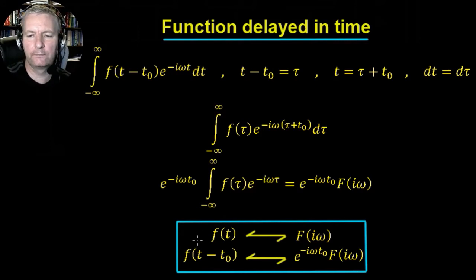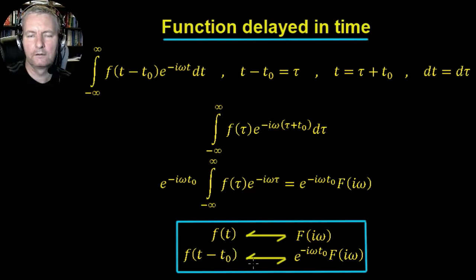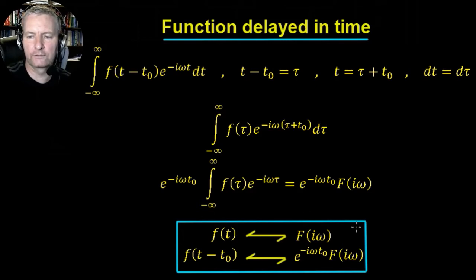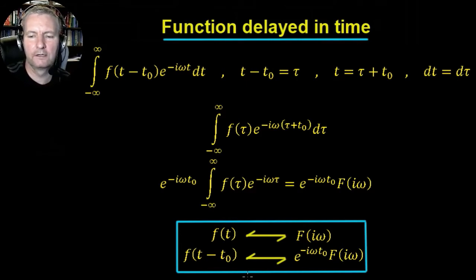So we can say that if we have a function f(t), its Fourier transform gives F(i·omega). If we have a delayed function f(t - t0), the Fourier transform gives F(i·omega) times e to the minus i·omega·t0. That's the transform pair we're looking at. Now we're going to look at it graphically, and when you see it graphically it makes a lot more sense.